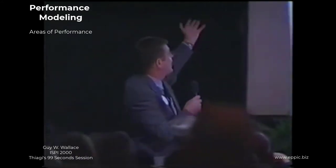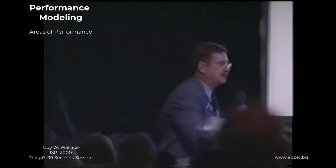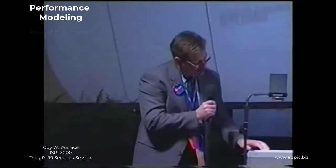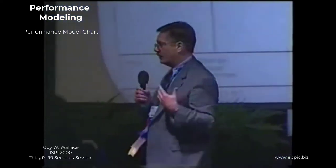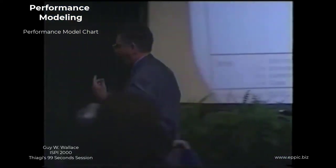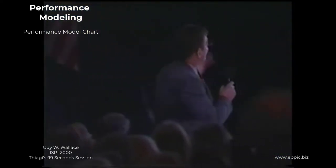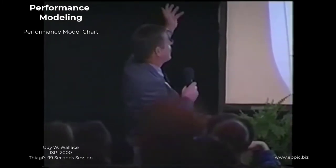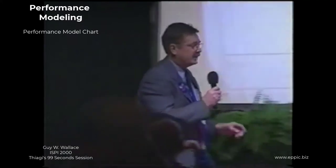This is an example for the most convenient store manager, based on some actual work. When you take one of those chunks, you can do this performance model which contains two parts. On the left hand side is ideal performance — the first three major sets of columns: the key outputs and measures, the key tasks, and the roles and responsibilities.